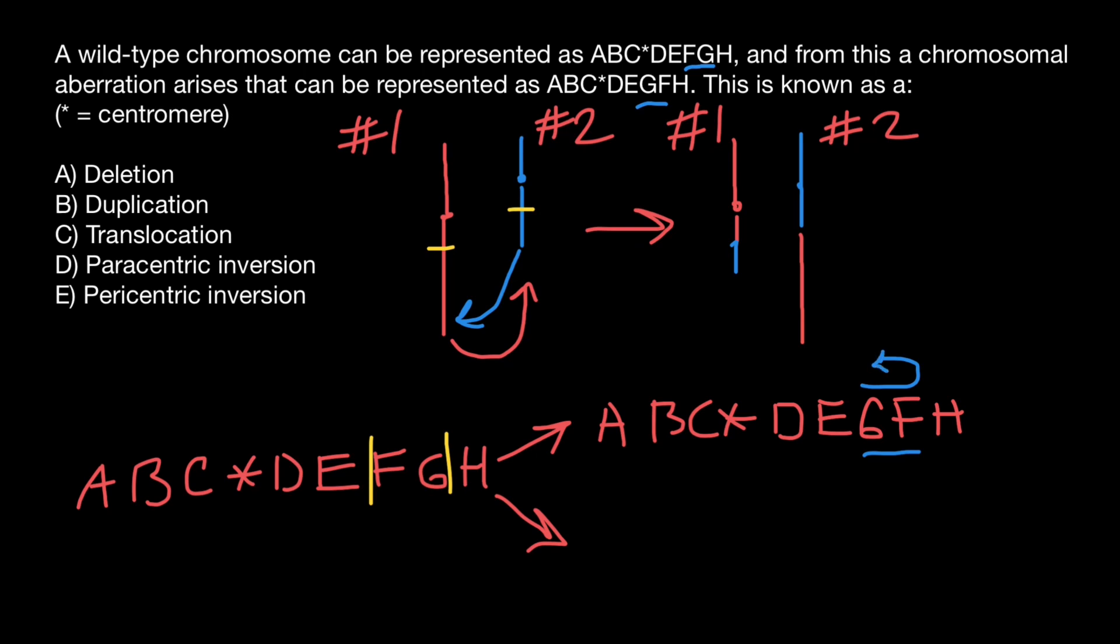But there also can be different type of inversion. Imagine that breakage happened in this place and in this place. This is going to result in the following sequence. We will have A, B, then D, then here is the centromere, C, E, F, G, and H. And this is going to be our inverted sequence.